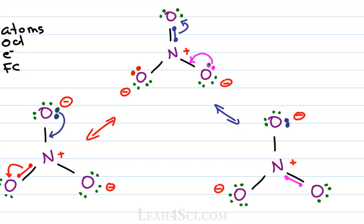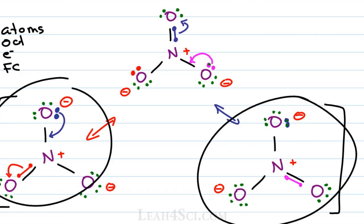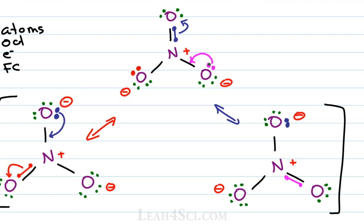One more thing you have to show with resonance is a bracket around all the structures. What this tells you is that everything in the brackets is constantly resonating back and forth. So it's not a question of which structure exists in nature — do we have this one for 25% of the time, this one for 35% of the time? No. In fact, none of these represent the real structure of the nitrate ion. They simply show you different extremes of what that intermediate looks like.